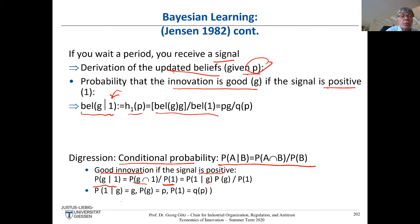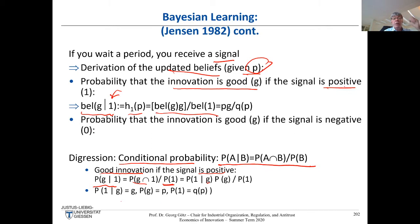Given this probability, we can immediately determine the updated belief, and therefore get a new probability in the next period that the innovation is good. Of course, we can also receive a negative signal — the respective agent made losses or had a low profit. How does that look like? We have the belief that it's a good innovation given that the signal was bad.